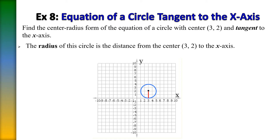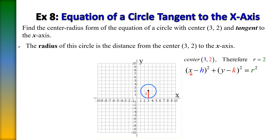We can plug everything into the standard form: (x − h)² + (y − k)² = r². Plugging in our values, we get (x − 3)² + (y − 2)² = 2². Squaring 2 gives us 4 on the right side, and there you have the equation of a circle that is tangent to the x-axis.